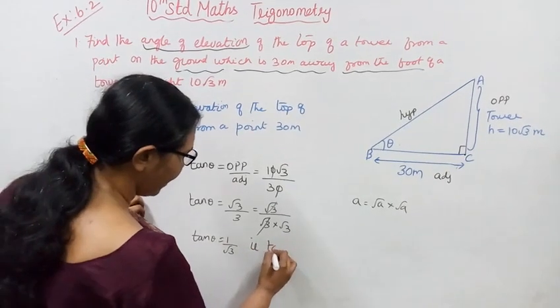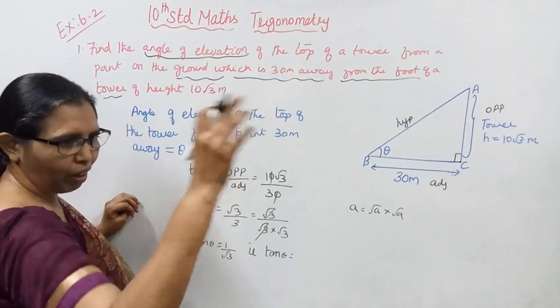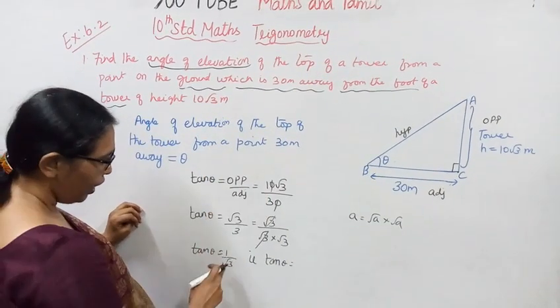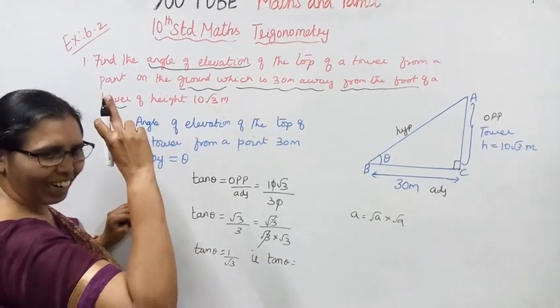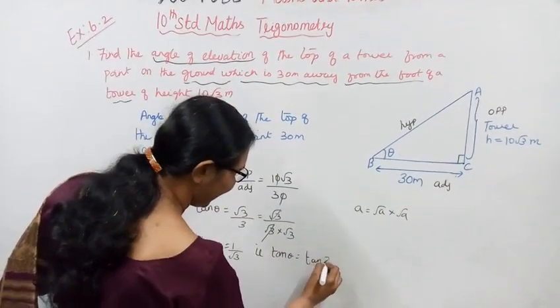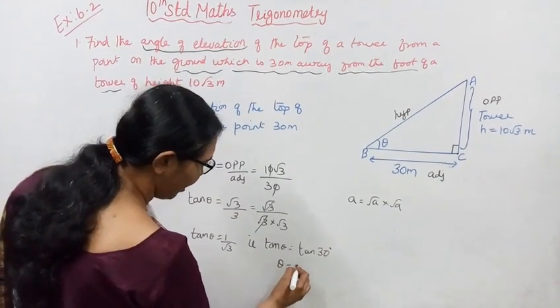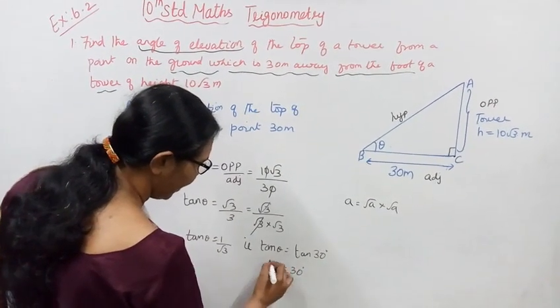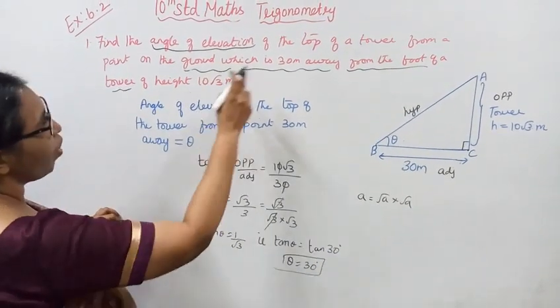Looking at the trigonometry table for angles 0, 30, 45, 60, 90 degrees, we find that tan 30 degrees equals 1 over root 3. Therefore theta equals 30 degrees.